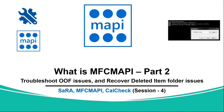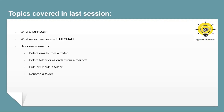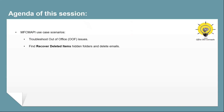Hi guys, I hope you all are doing well and welcome to Office 365 Concepts. In the last video, we talked about MFC MAPI tool and discussed a few use case scenarios where you can use it. In this video, we will discuss a few more use case scenarios: how to troubleshoot out-of-office issues, how to find the hidden folders of the Recover Deleted Items folder, and how to delete emails from these folders using MFC MAPI tool.